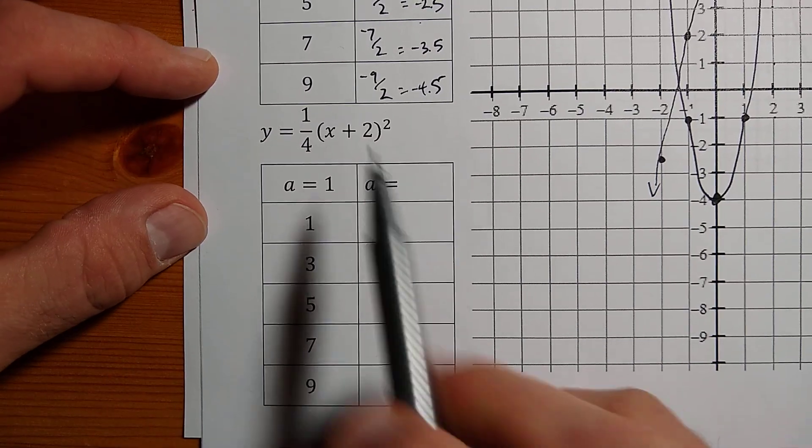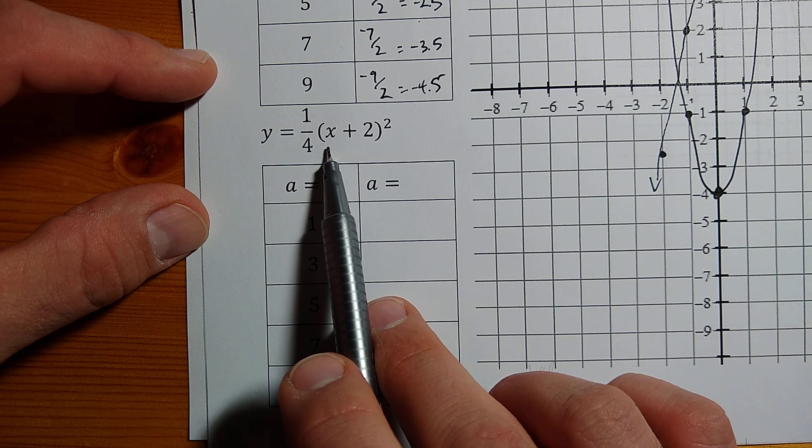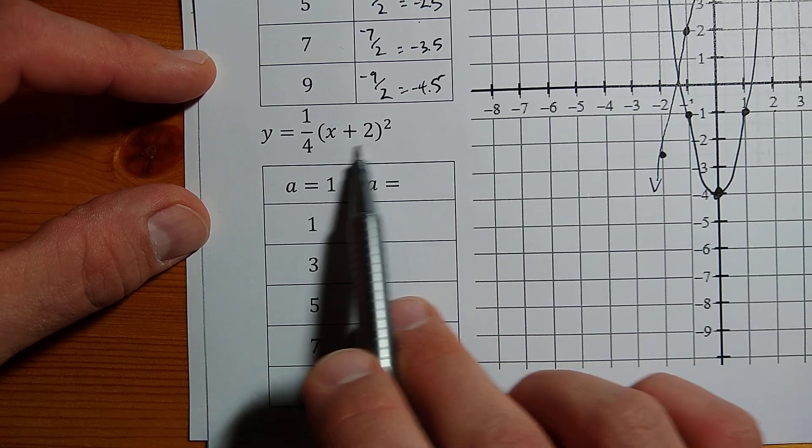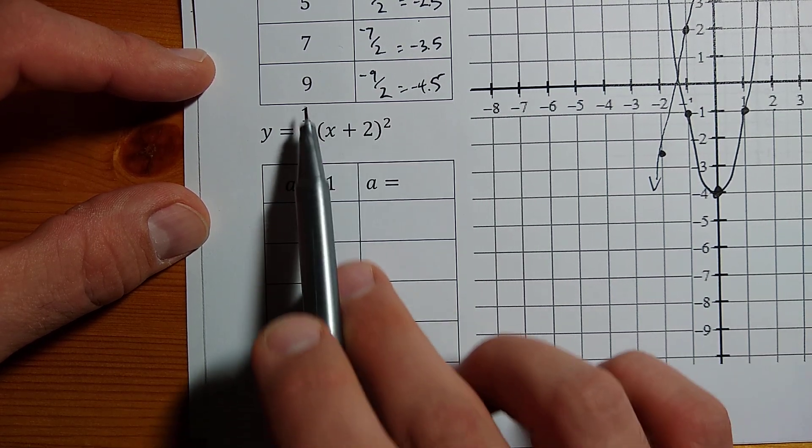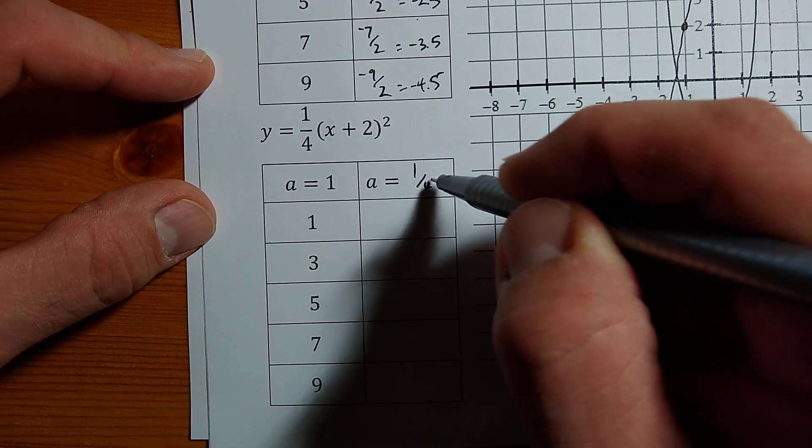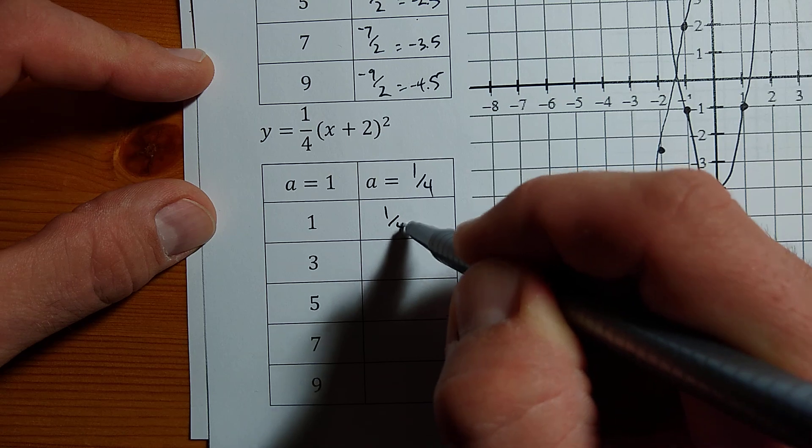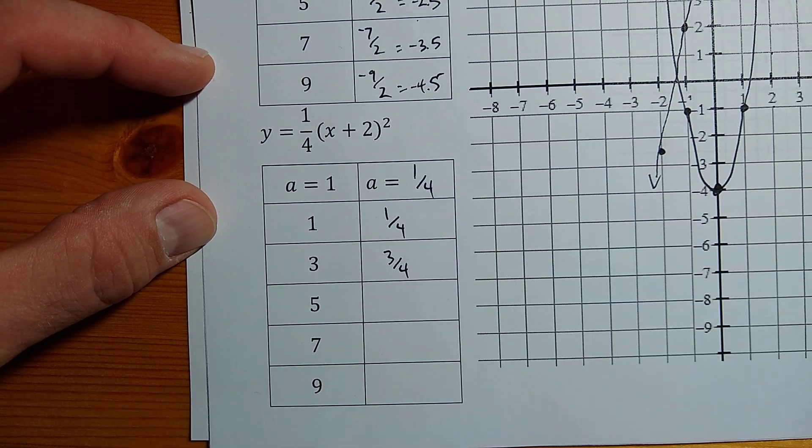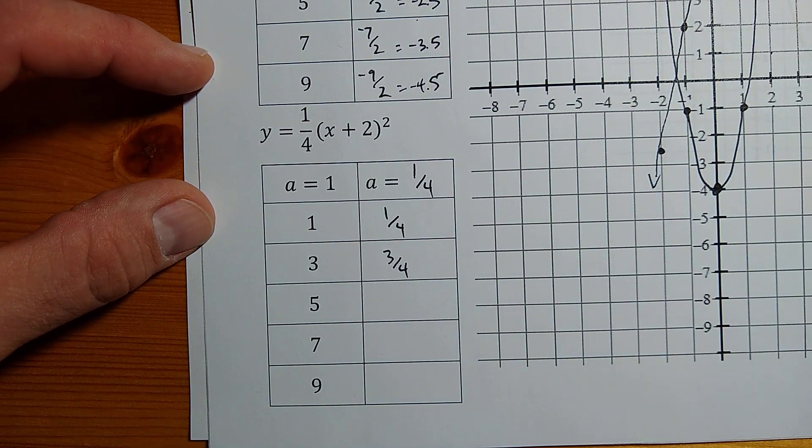Here's one more for you to try. 1 quarter and then times x plus 2 squared. So this has a vertex of negative 2, 0 and the 1 quarter there is the a value. So here's the first one, here's the second one, and you can go from there. Okay, thanks very much.